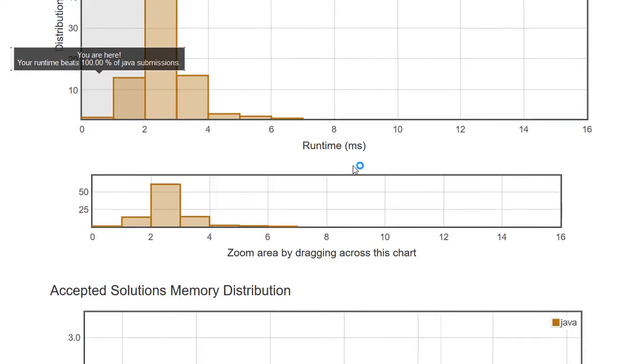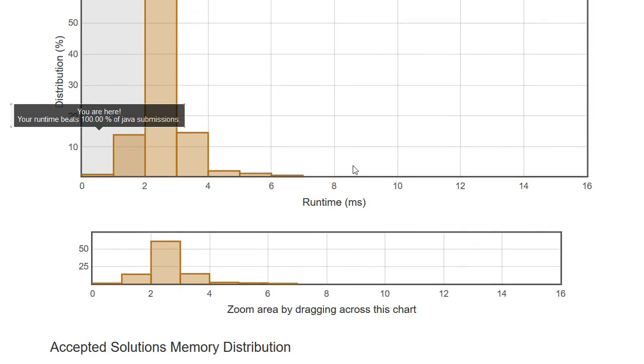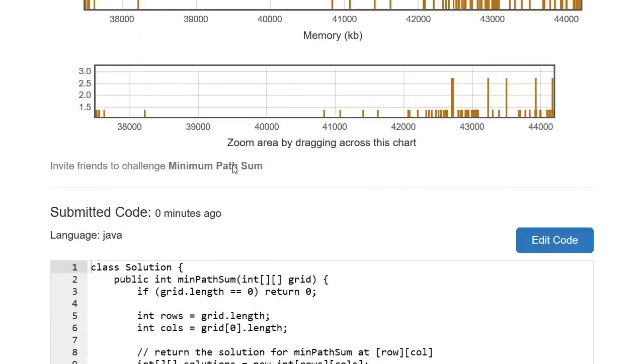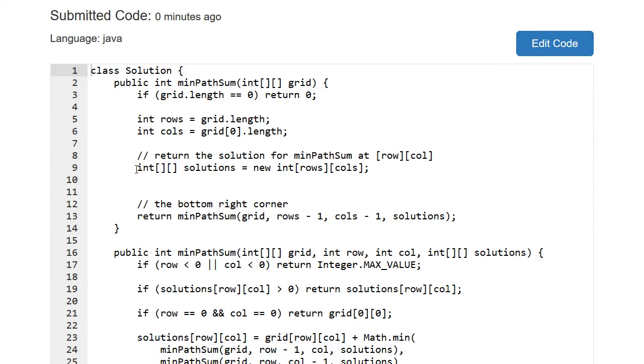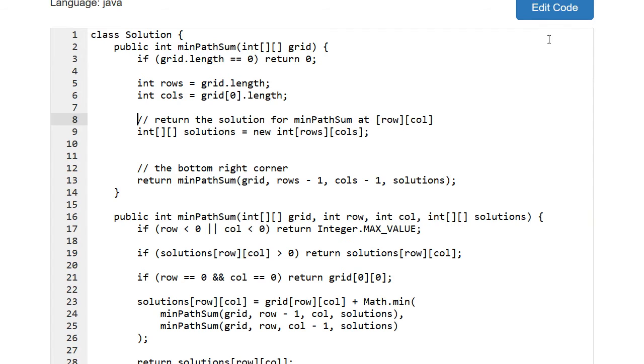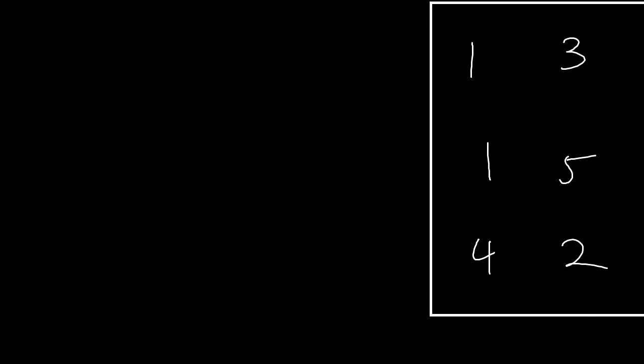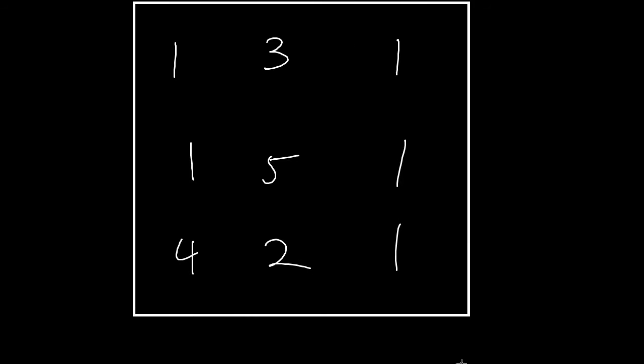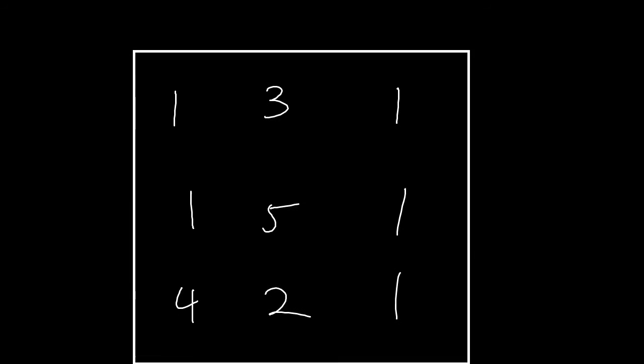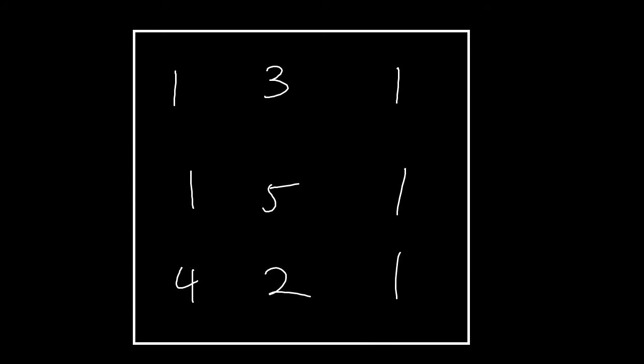Okay, so in this problem, you can see that we have 100% in terms of runtime, but we are using an m times n amount of space, we had to create a new solutions grid. So what if the question asked us to do this in constant space? So let's give it another go. What we want to do instead, is to build up our solution from the very beginning.